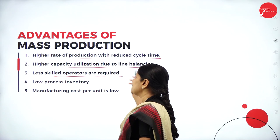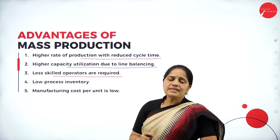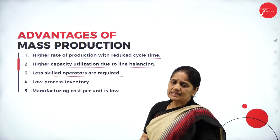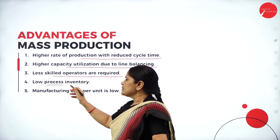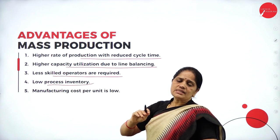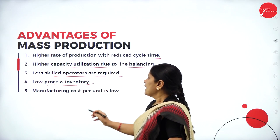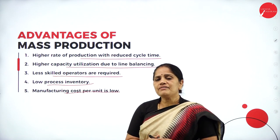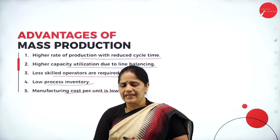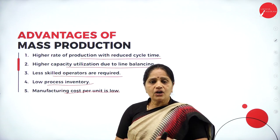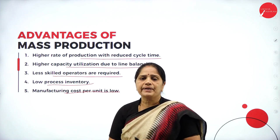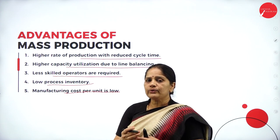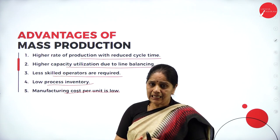Less skilled operators are required — persons operating the machinery do not need particular skills. Low process inventory. Manufacturing cost per unit is low because economies of large-scale operation apply — when undergoing mass production, the cost per unit of each product will be very low.